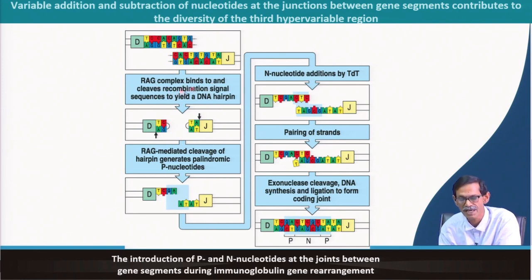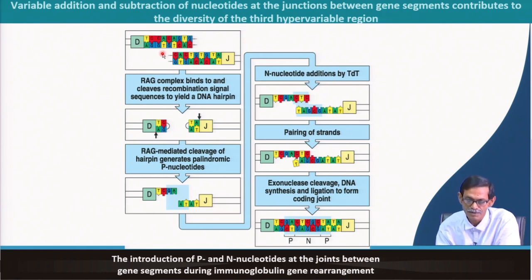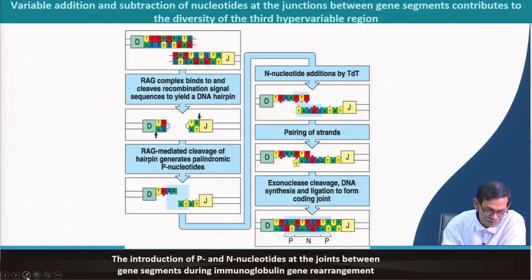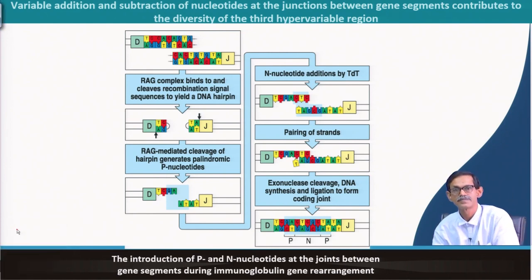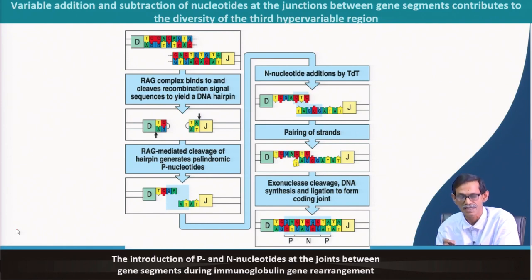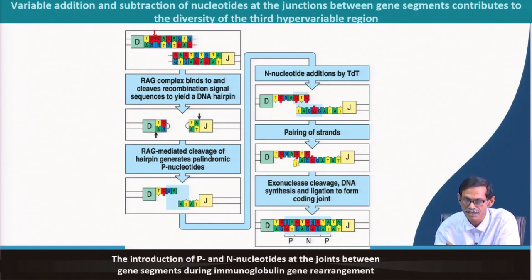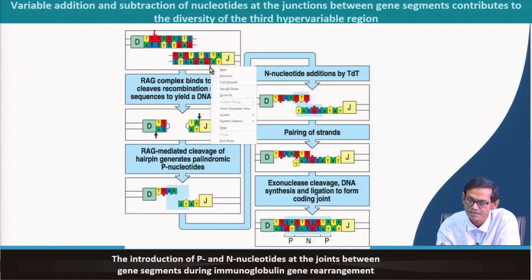The RAG complex binds and clips the recombination signal sequence. The recombination signal has the heptamer. The RAG complex binds and cuts where it cleaves just after T and C — in this case just after T and A.